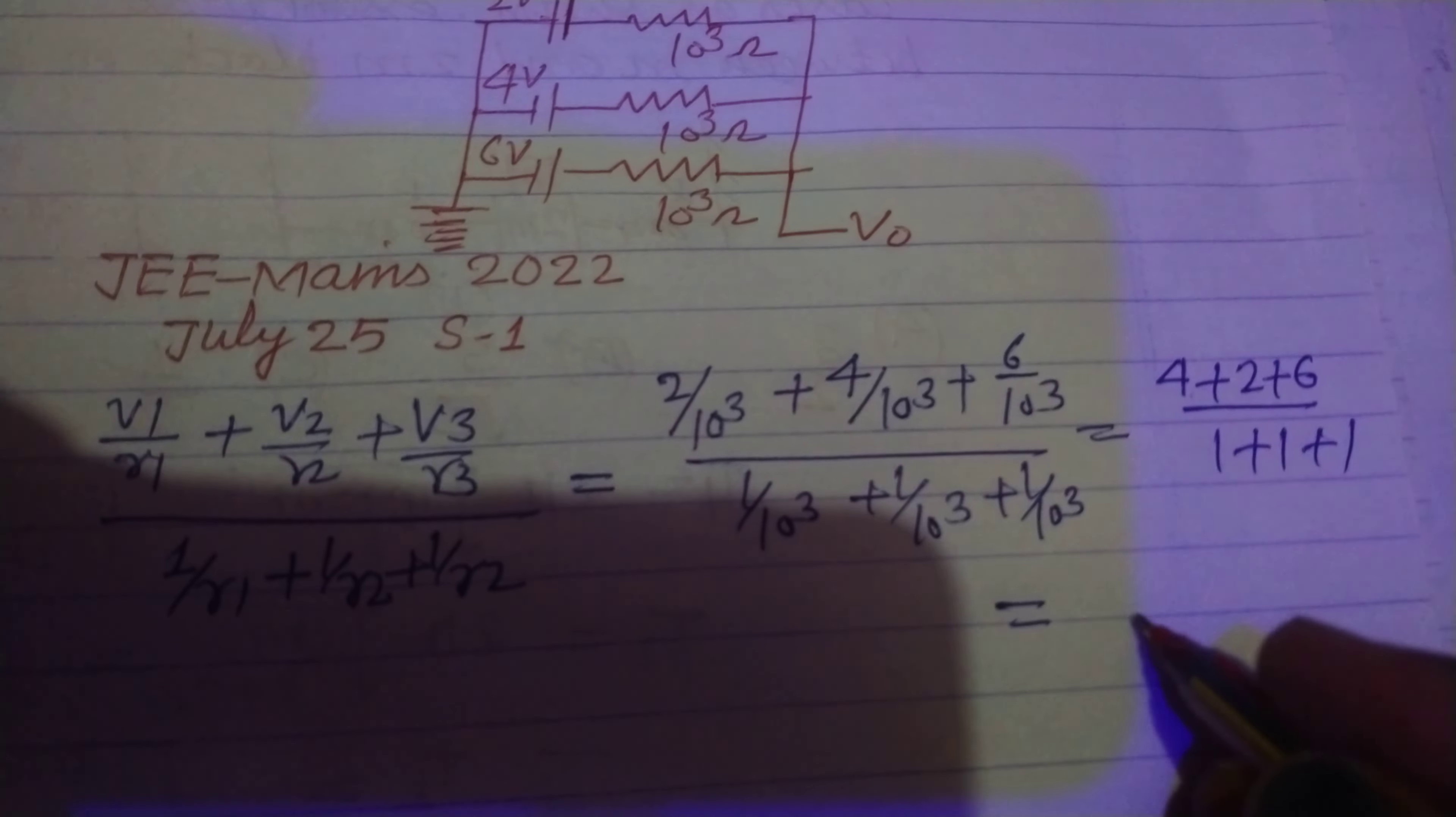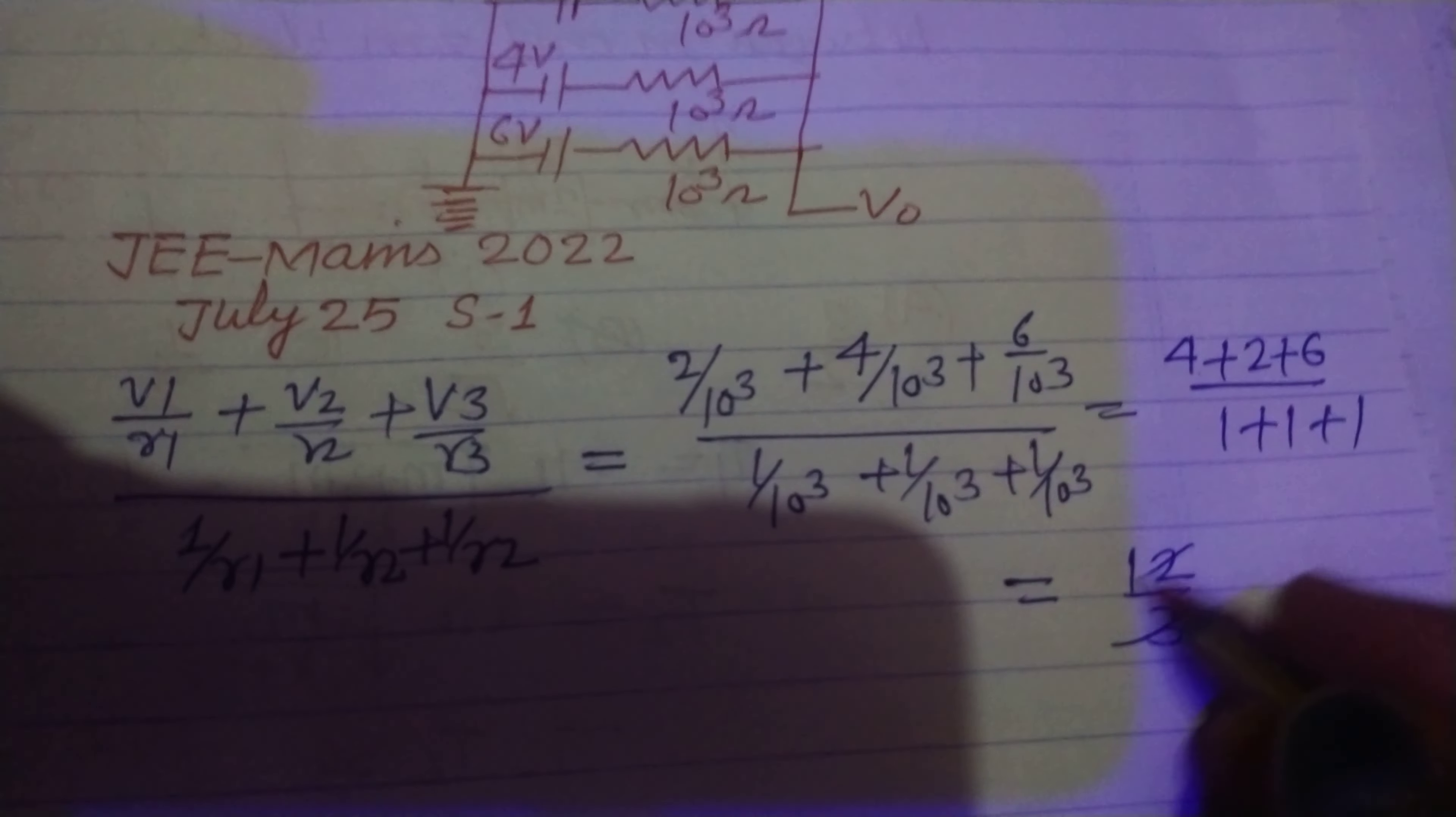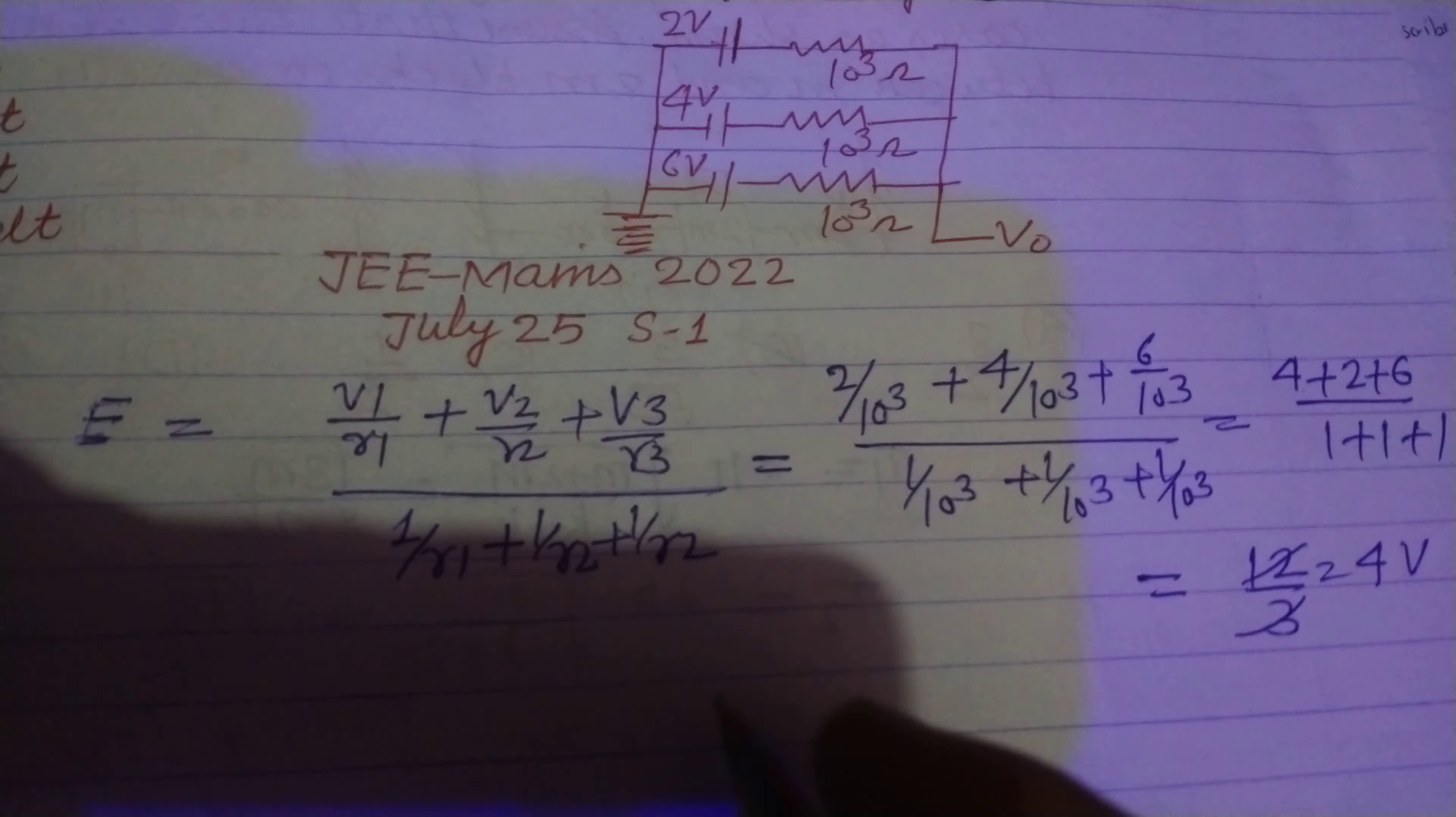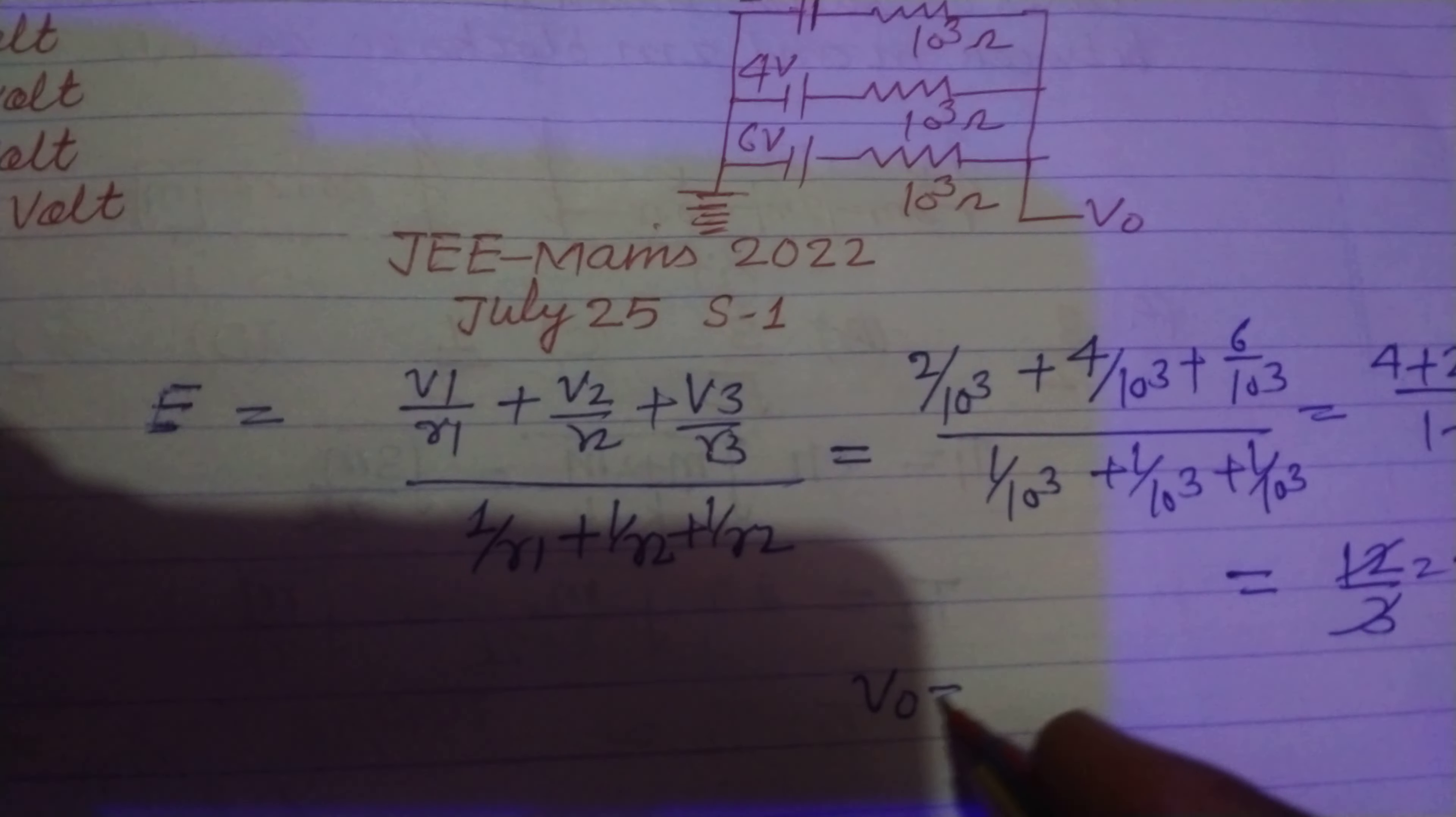This is 6, 6, 12, 12 over 3. So, this is 4V. So, 4V is the V0 here.